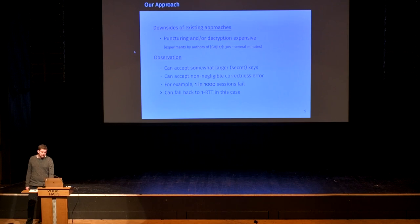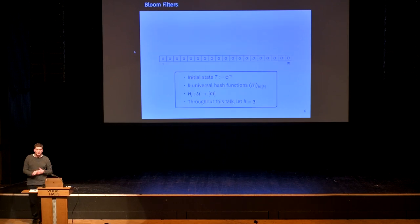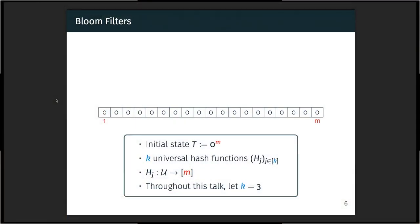Having these observations in mind, we came up with a novel primitive which we term bloom filter encryption. Bloom filter encryption can essentially be seen as a puncturable encryption scheme which has those properties I just mentioned, and therefore gives us the advantage of blazing fast decryption and puncturing. Most of you will probably know what bloom filters are, but let me quickly recap how bloom filters work.